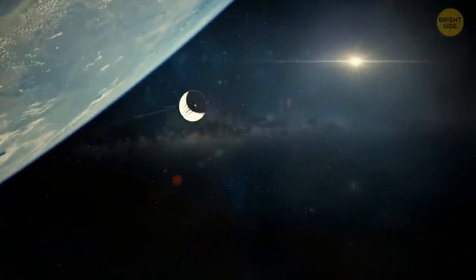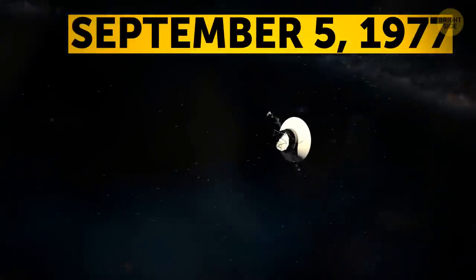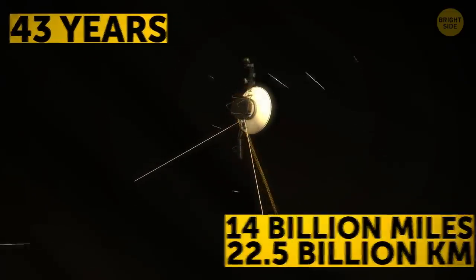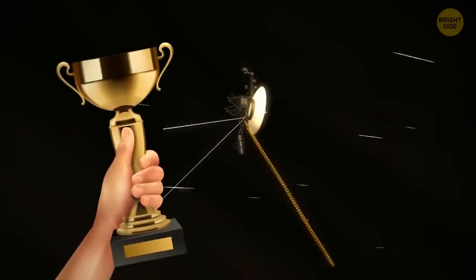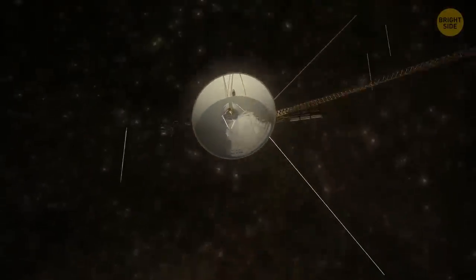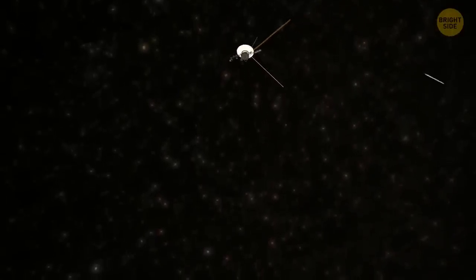For comparison, the Voyager 1 mission was launched on September 5, 1977. In 43 years, it's traveled about 14 billion miles and is the most remote human-made object. It's also the loneliest one in the universe. It has long since left the boundaries of our solar system and is moving further into outer space.